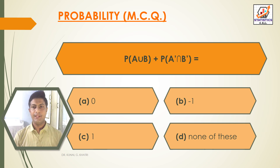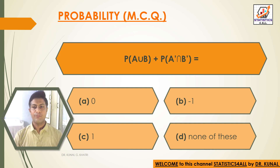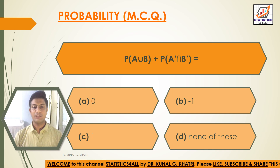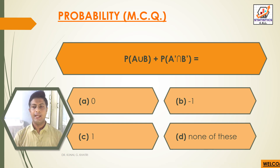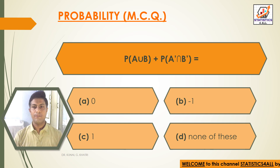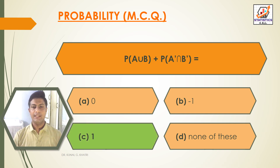Question 18: P(A∪B) + P(A'∩B') equals? Option A: 0. Option B: −1. Option C: 1. Option D: None of these. Answer: Option C — P(A∪B) + P(A'∩B') = 1.